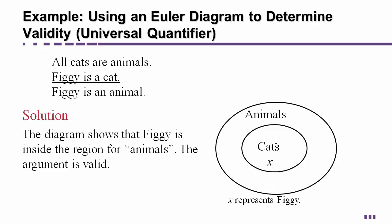You see how the circle that represents cats is inside the circle that is animals because all cats are animals means that all of the cats are inside the animal category. Then if Figgy is a cat then x representing Figgy has to be inside the cat circle. Is it true that Figgy is an animal? Well x is inside the animal circle so yes Figgy is an animal and it is true and therefore it is a valid argument.